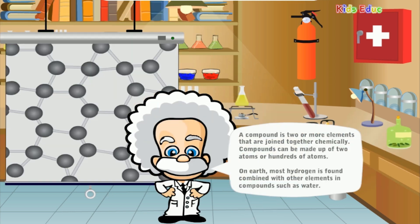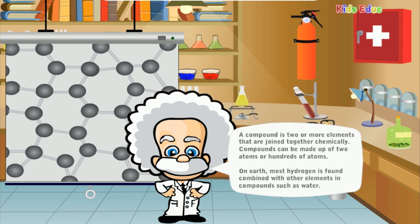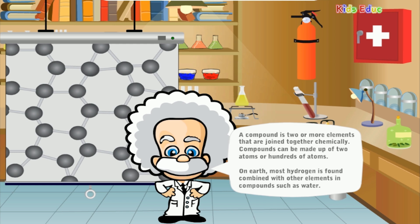A compound is two or more elements that are joined together chemically. Compounds can be made up of two atoms or hundreds of atoms. On Earth, most hydrogen is found combined with other elements in compounds, such as water.